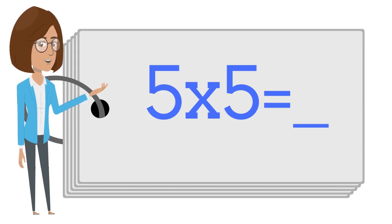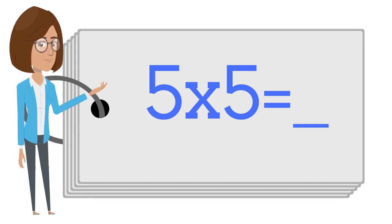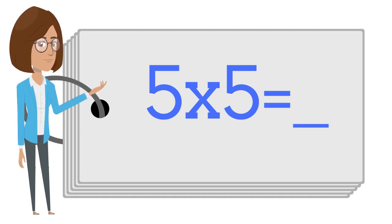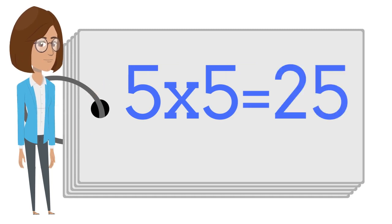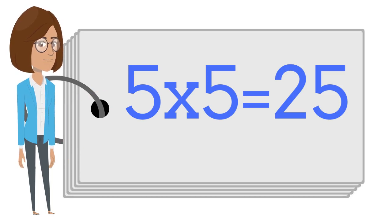Five times five is? Say the answer out loud. Five times five is twenty-five.